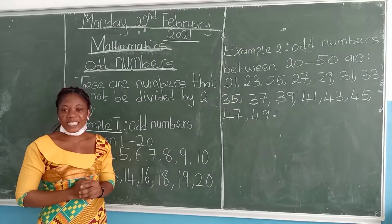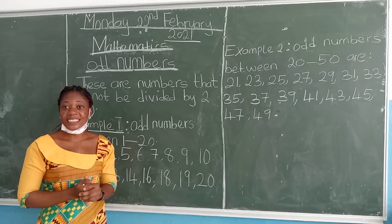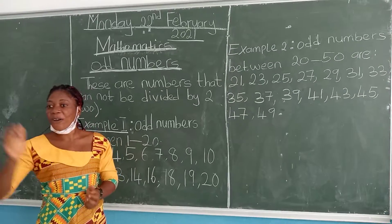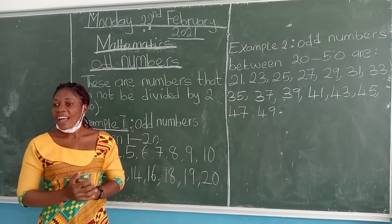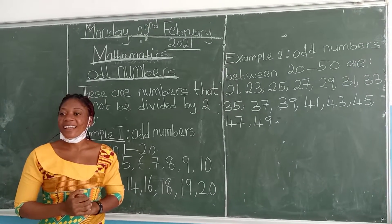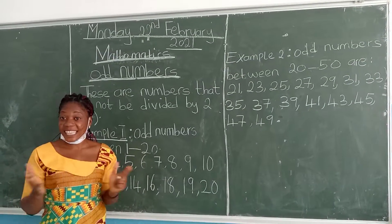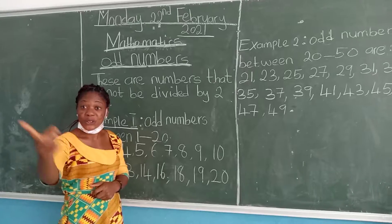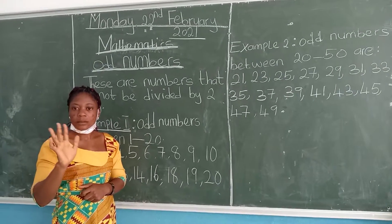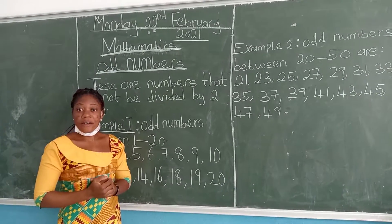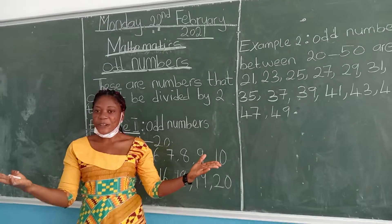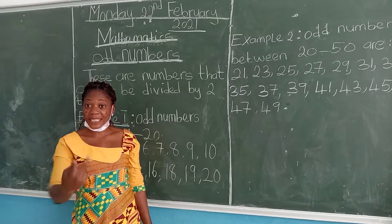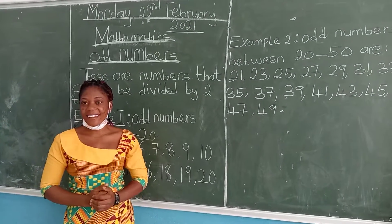Our last lesson was based on even numbers. What do we say even numbers are? Fernando, help us define what even numbers are. Excellent. He said even numbers are those whole numbers when you divide them by two, there is no remainder.